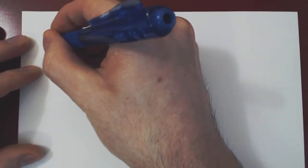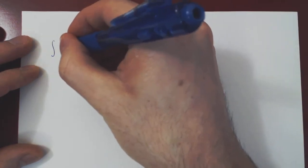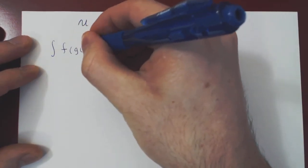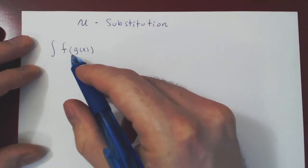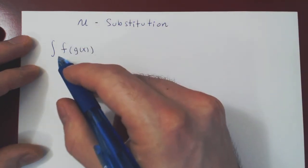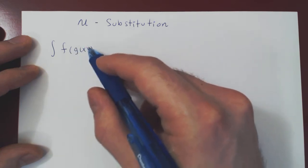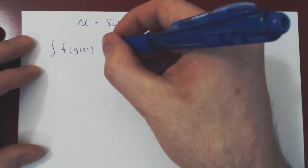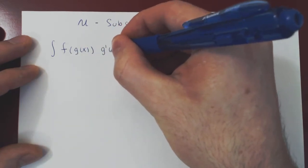Suppose you have an integral as a function of x that looks like this, so you have f of g of x, so composition, so the whole expression is a function, f of the other function g of x, and the whole thing is multiplied by g prime of x dx.